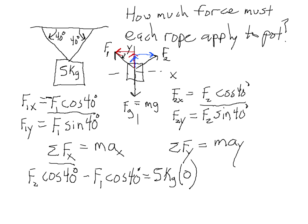So I can add F1 cosine 40 to both sides, since this side right here is 0. And that gives me F2 cosine 40 equals F1 cosine 40. I then divide both sides by cosine 40, and I end up with the fact that F2 equals F1.